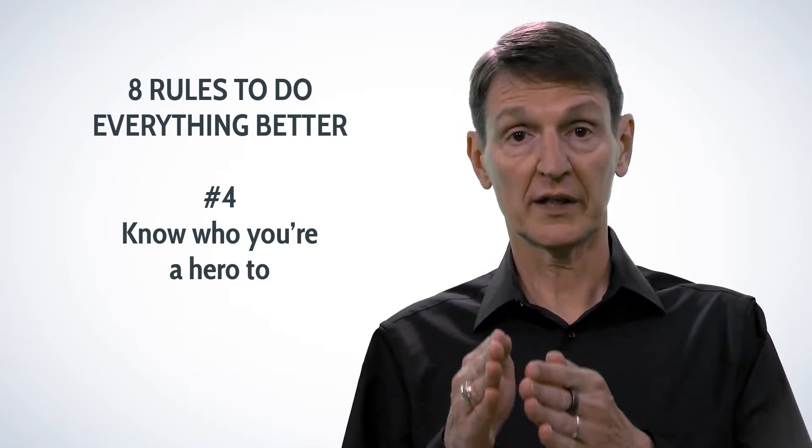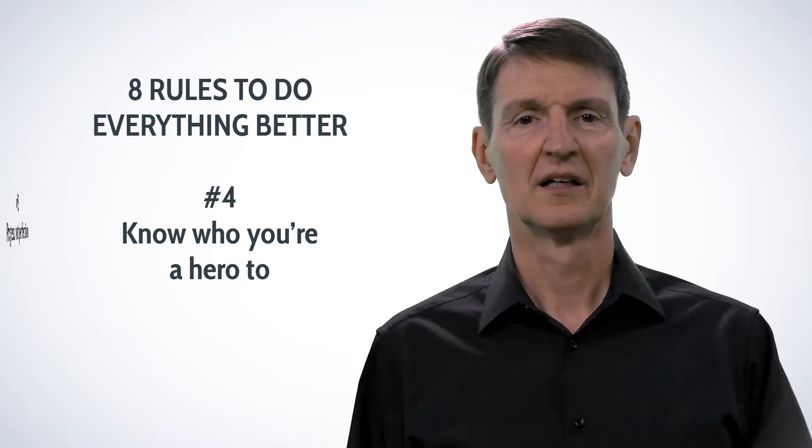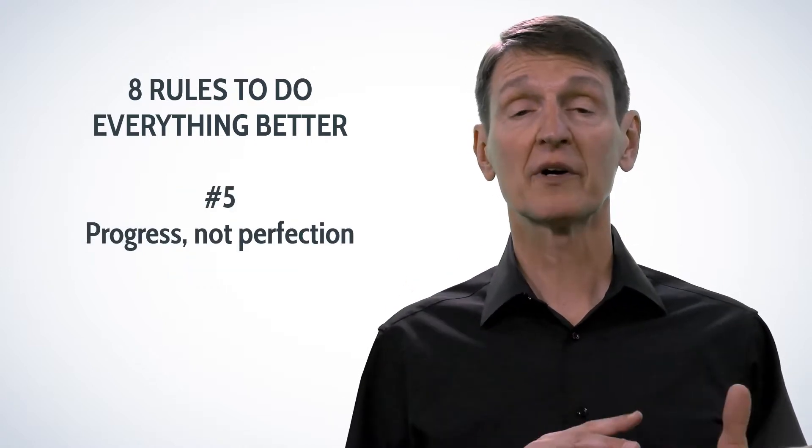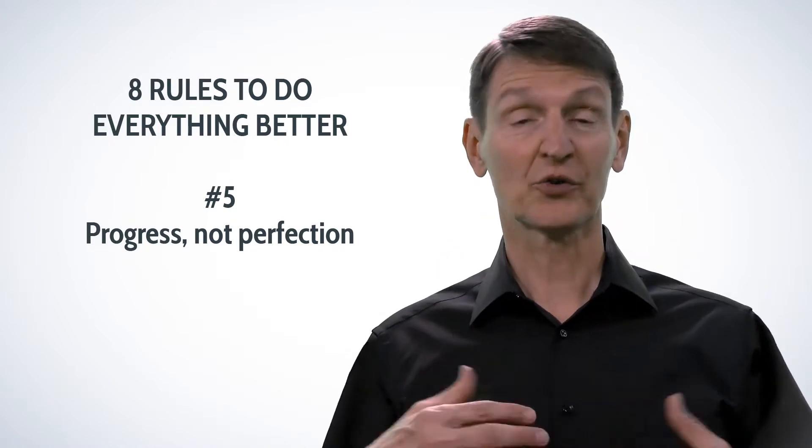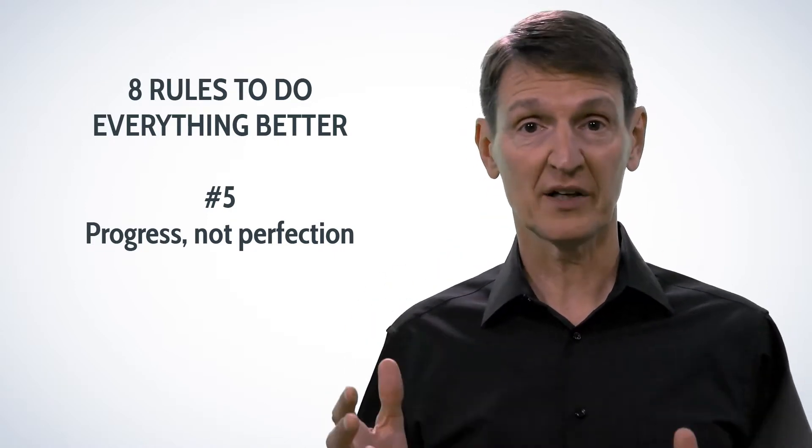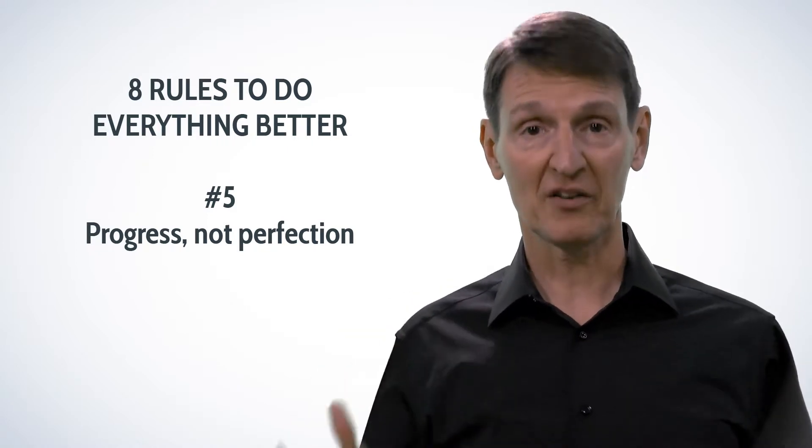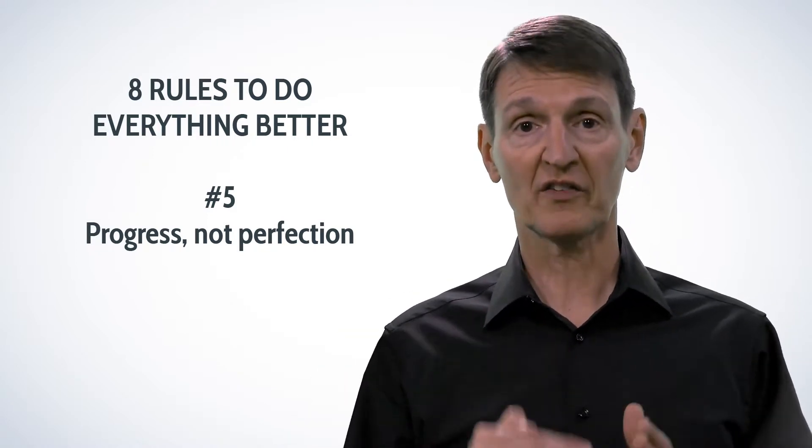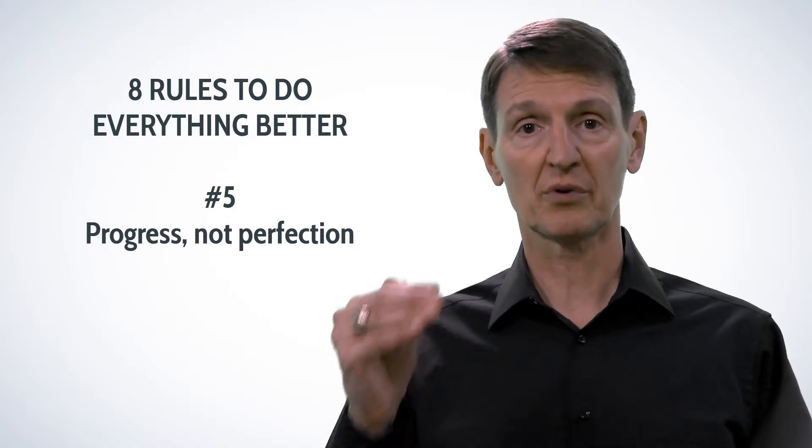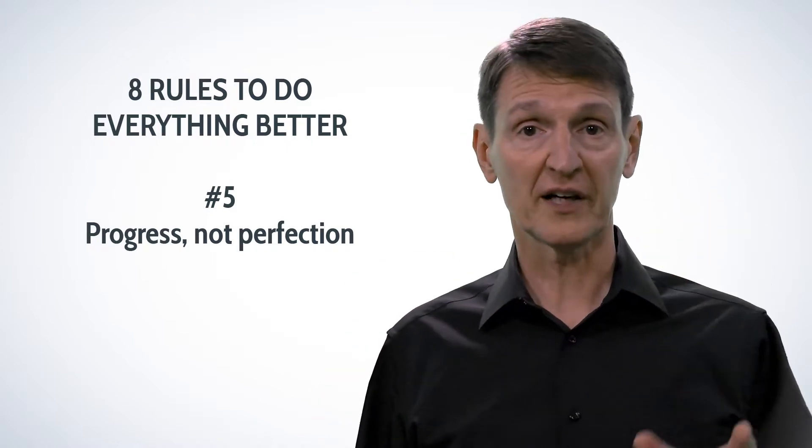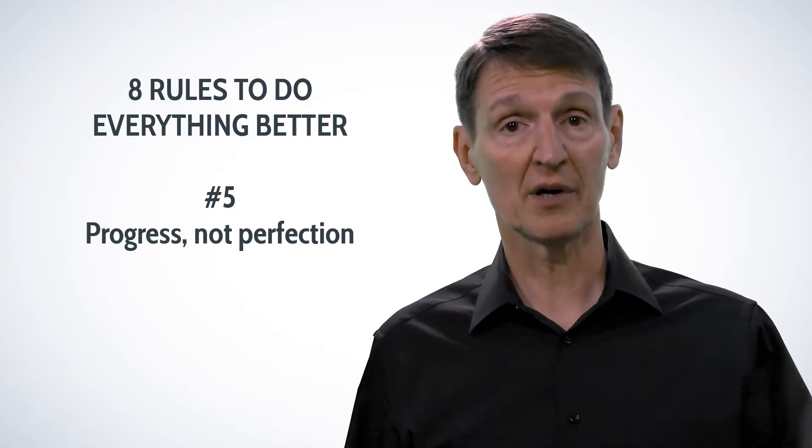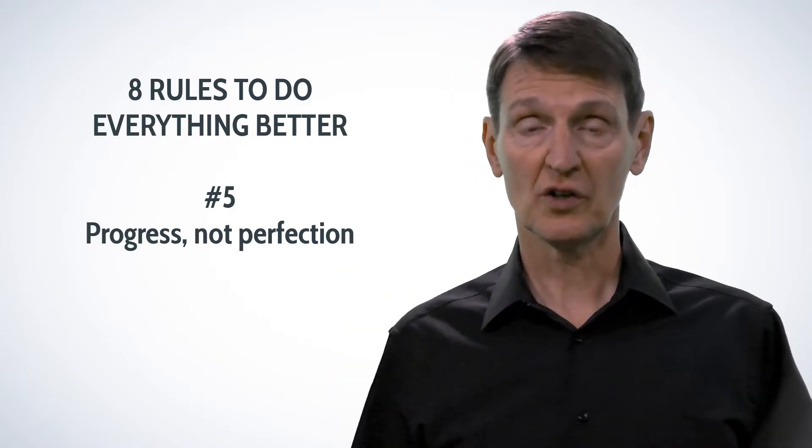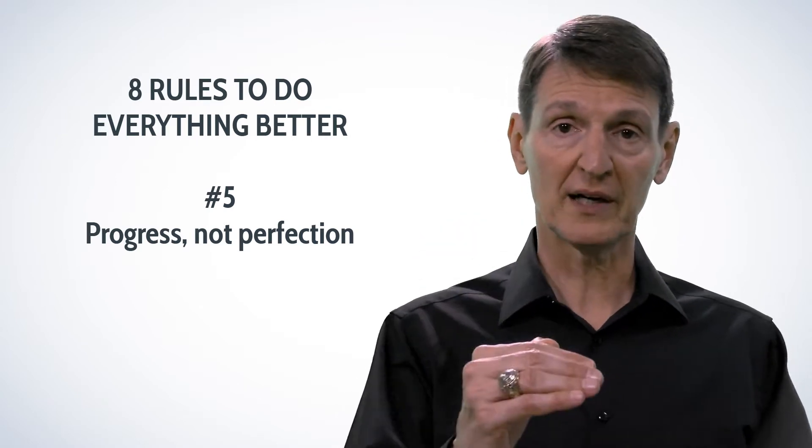Number five: progress, not perfection. You know, it's interesting how school says get 100%, get an A+. Life is a lot messier. You really want to just make sure you're constantly achieving progress. You try to achieve perfection, you'll drive yourself and everybody else around you absolutely bonkers, crazy, nuts. Just continuously get progress and you'll get to where you want to go when you're supposed to get there.